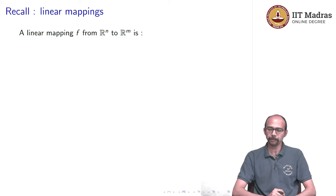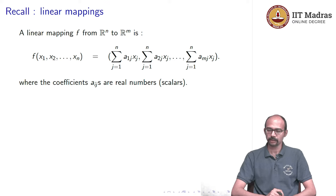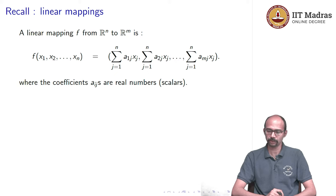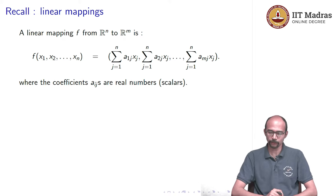A linear mapping f from R^n to R^m is a function, and the function has a very particular form: every coordinate is given by a linear combination. The coefficients in that linear combination are real numbers.